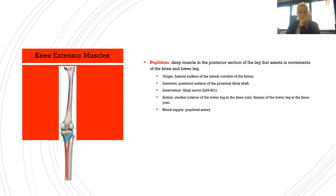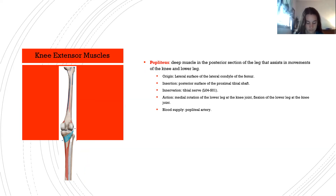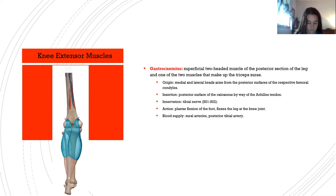The popliteus is a deep muscle in the posterior leg that assists in movements of the knee and lower leg. Origin: lateral surface of the lateral condyle of the femur. Insertion: posterior surface of the proximal tibial shaft. Innervation: tibial nerve L4–S1. Action: medial rotation and flexion of the lower leg at the knee joint. Blood supply: popliteal artery.